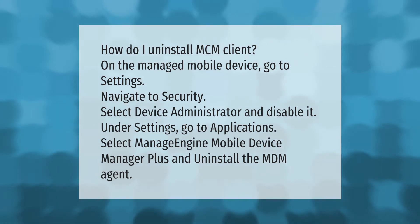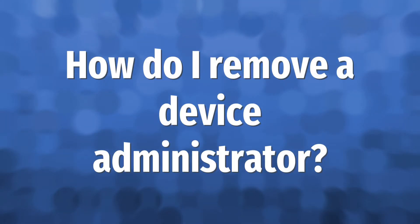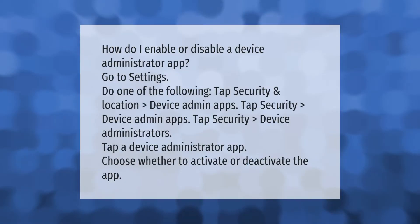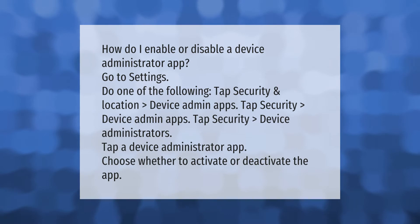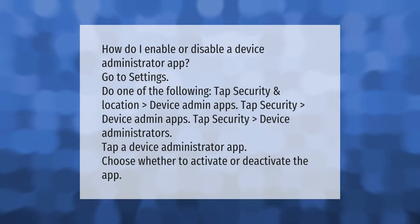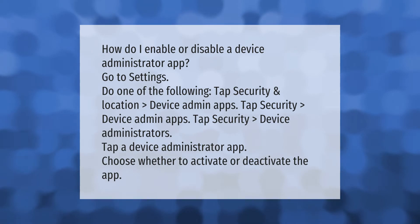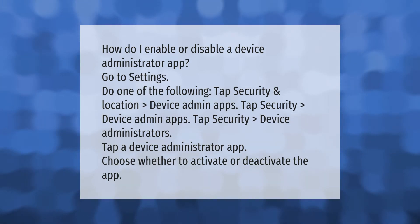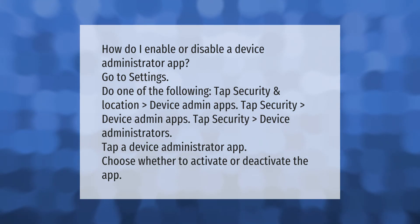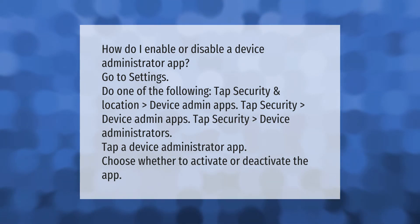How do I enable or disable a device administrator app? Go to Settings and do one of the following: tap Security and Location, then Device Admin Apps; or tap Security, then Device Admin Apps; or tap Security, then Device Administrators.